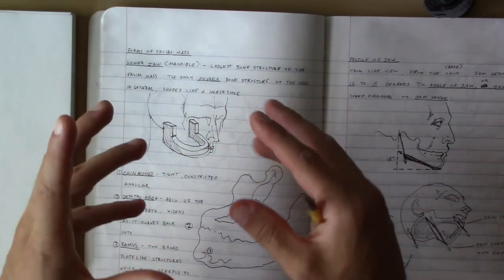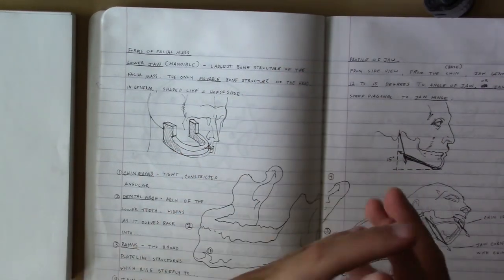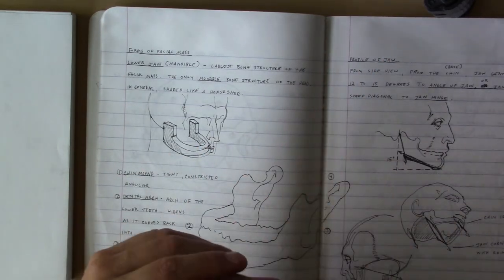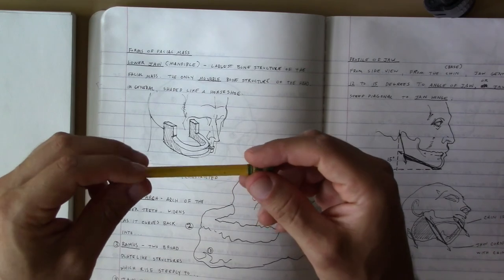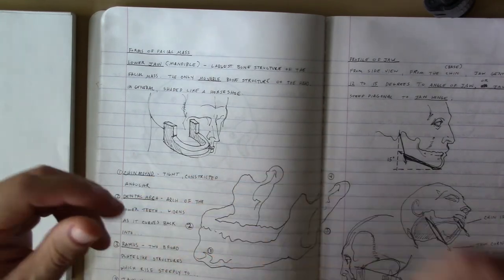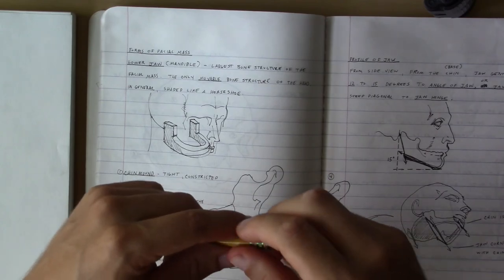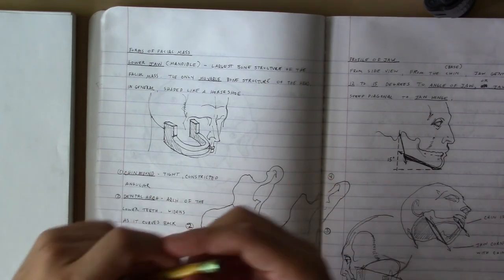The lower jaw is the largest bone structure of the facial mass. And it's the only bone structure that moves on the head. You ever think about that? Your lower jaw is the only movable large structure on our heads.